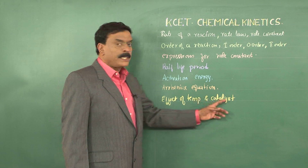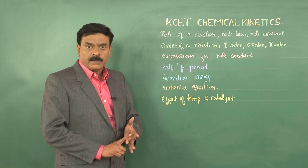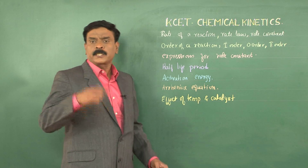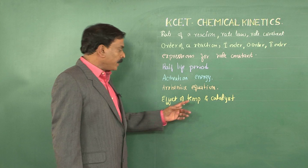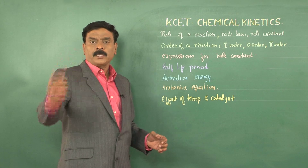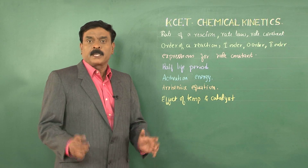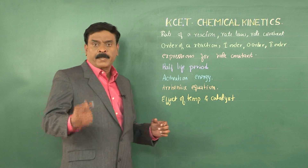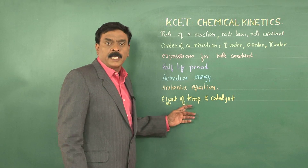Coming to effect of temperature and catalyst: we know the rate of a reaction depends on concentration, pressure, nature of the reactants, temperature, and catalyst. It is found that when temperature is increased, the rate of the reaction increases in general. This is because when temperature is increased, the energy of all the molecules increases, and quite a few of the reactant molecules will have enough energy to cross the activation energy barrier to form the products. In other words, when temperature increases, the number of effective collisions increases and hence the rate of the reaction increases.